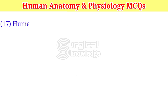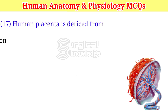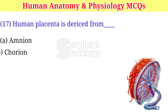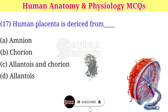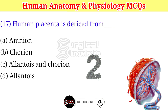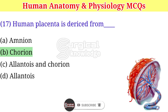Human placenta is derived from: A. Amnion. B. Chorion. C. Allantois and Chorion. D. Allantois. Right answer is chorion.